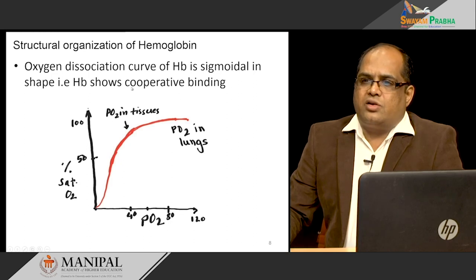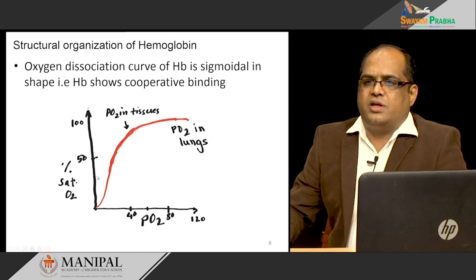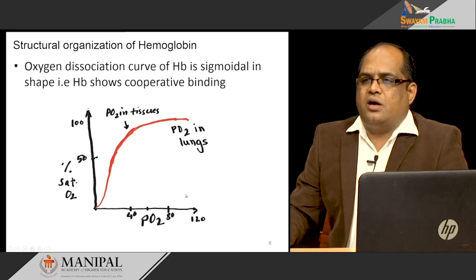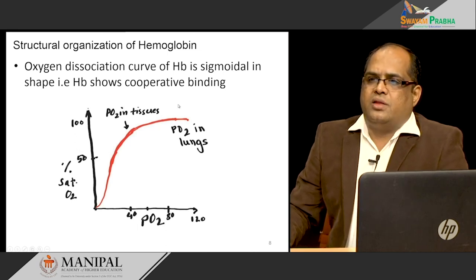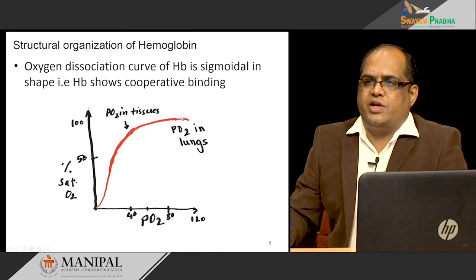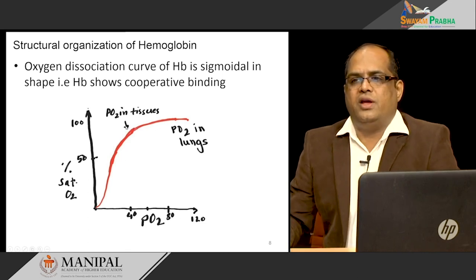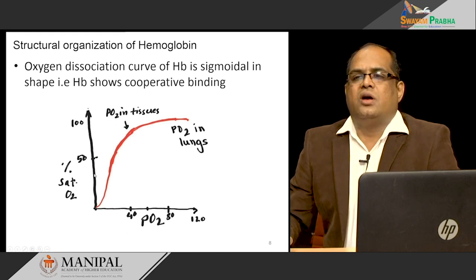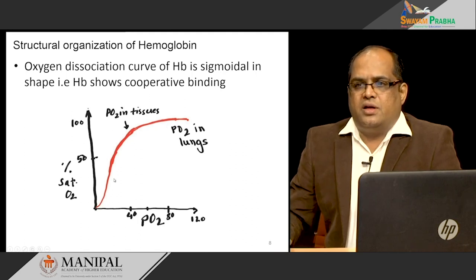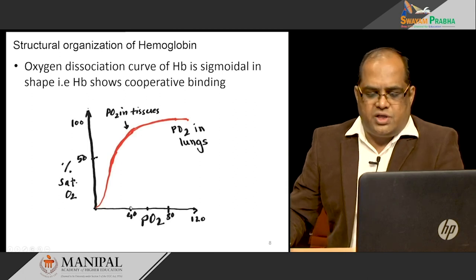When you look at the oxygen dissociation curve, on the x-axis it is partial pressure of oxygen and on the y-axis it is percent saturation of oxygen. At 100% PO2, at the level of the lungs, almost all hemoglobin is 100% saturated. When the PO2 drops down at the tissue level to around 40, it releases the oxygen to the tissues. So hemoglobin is fully bound in the lungs and then gives back the oxygen to the tissues as partial pressure of oxygen decreases.